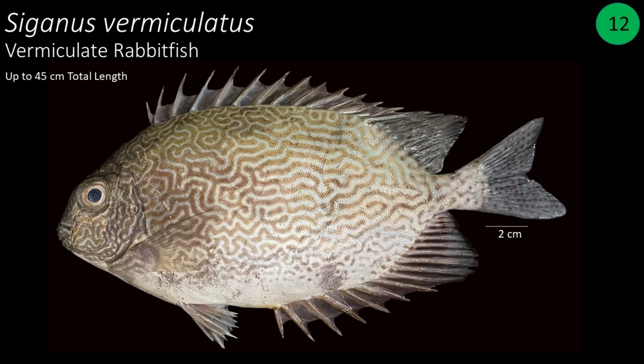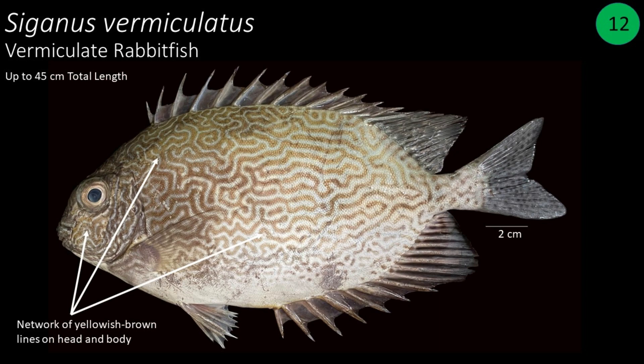Number 12: Siganus vermiculatus, commonly called vermiculate rabbitfish. This can grow up to 45 centimeters in total length. This fish has a network of yellowish-brown lines on the head and body, and there are numerous small dark spots on the caudal fin.